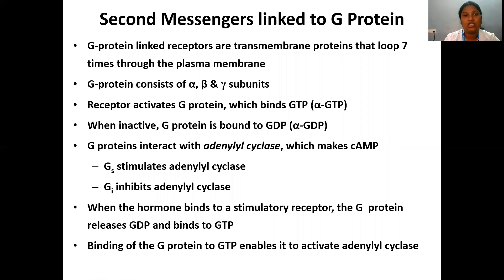G protein-linked receptors are transmembrane proteins that span seven times through the plasma membrane. G protein consists of alpha, beta, and gamma subunits. When inactive, G protein is bound to GDP on the alpha subunit. When the receptor is activated by hormone binding, GDP is exchanged for GTP, activating the G protein. There are two types: Gs stimulates adenylyl cyclase increasing cyclic AMP production, while Gi inhibits adenylyl cyclase decreasing cyclic AMP production.